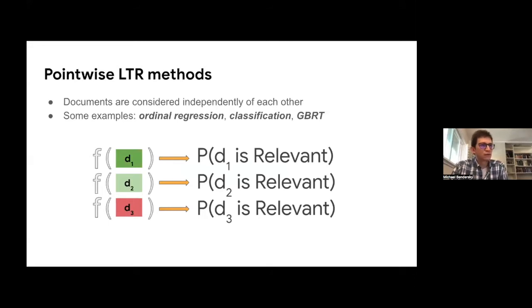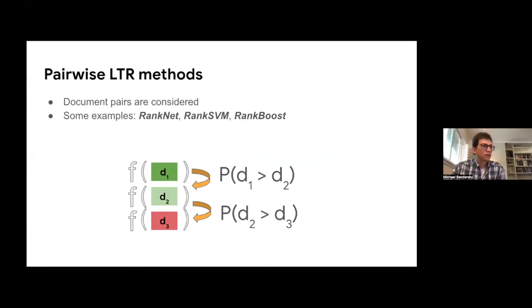There are multiple techniques developed for learning to rank. Pointwise methods consider documents independently of each other — we predict the probability of a document being relevant, which is essentially a classification problem. In the pairwise setting, we consider document pairs, predicting the probability that document one is better than document two, minimizing discordances in ranking. Examples include RankNet and RankSVM.